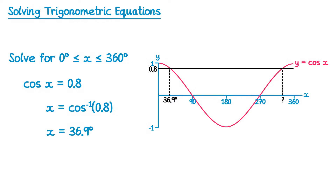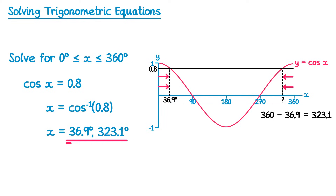The distance from 0 to 36.9 degrees must be the same distance from 360 back to our solution. So we do 360 take away 36.9, and we find the other solution, which is 323.1 degrees. This is also between 0 and 360, so it's a valid solution. We get two solutions to this equation: 36.9 degrees and 323.1 degrees.